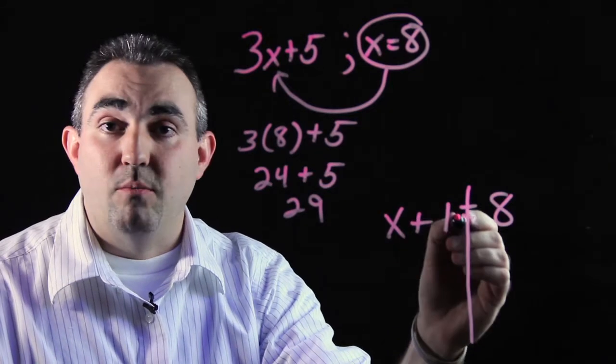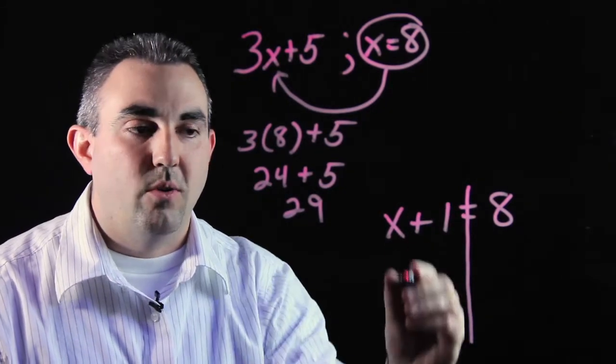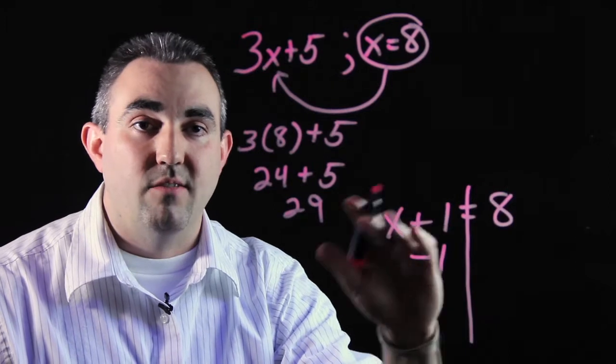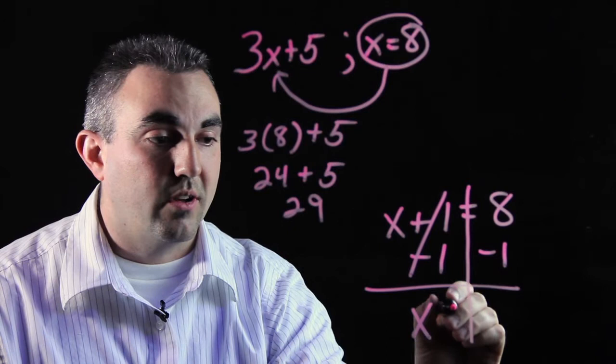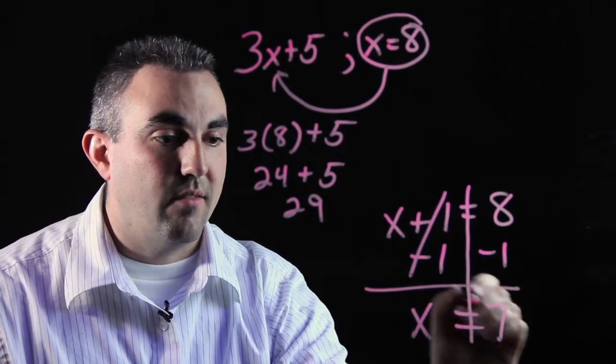So if it says plus 1, you do the opposite of plus 1, which is minus 1 on both sides of the equation. Minus 1, minus 1. The ones on this side cross out and you will get x equals 7.